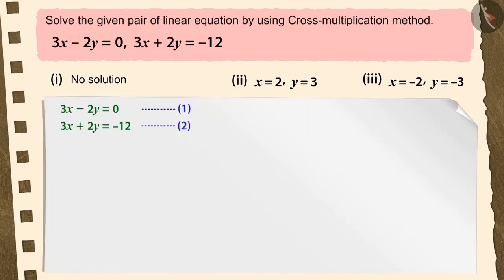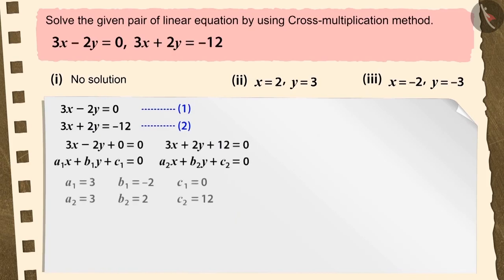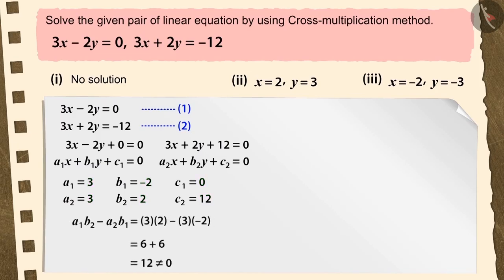The given equation will initially be written in the form of general form of linear equations. Let's find out all the values of the coefficients and constants and let's test the condition a1b2 minus a2b1 not equal to 0.